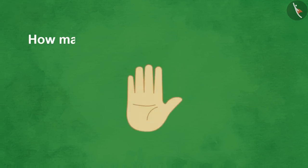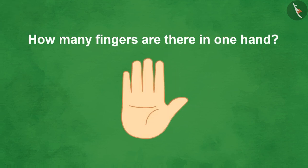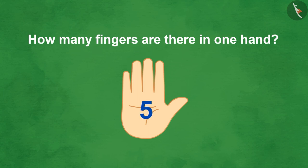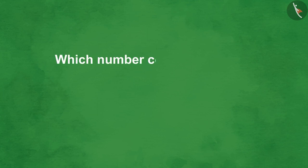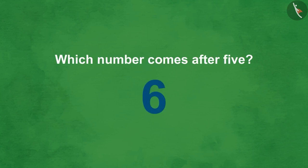How many fingers are there in one hand? Children, can you tell how many fingers are there in one hand? Exactly, there are 5 fingers in a hand. Children, can you tell which number comes after 5? That's right — after 5 comes the number 6.